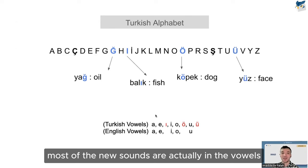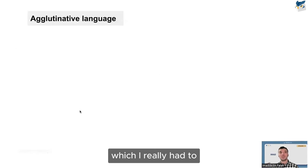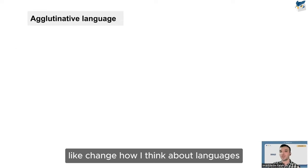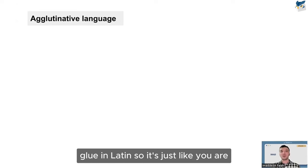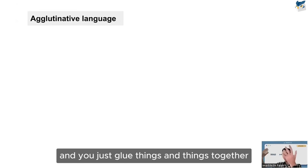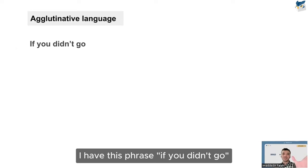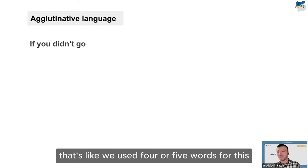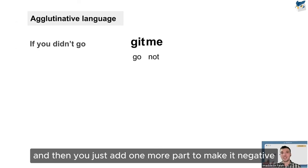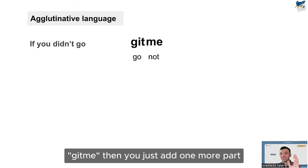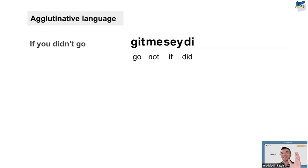Most new sounds in Turkish are actually in the vowels, so only the vowels are a bit different. One really fascinating feature I had to adjust my thinking for is that Turkish is agglutinative — 'agglutinative' comes from the Latin word for 'glue.' You take a word and glue things together. For example, in English we say 'if you didn't go' — that's four or five words. In Turkish, 'git' means 'go,' and you add a part to make it negative: 'gitme.'